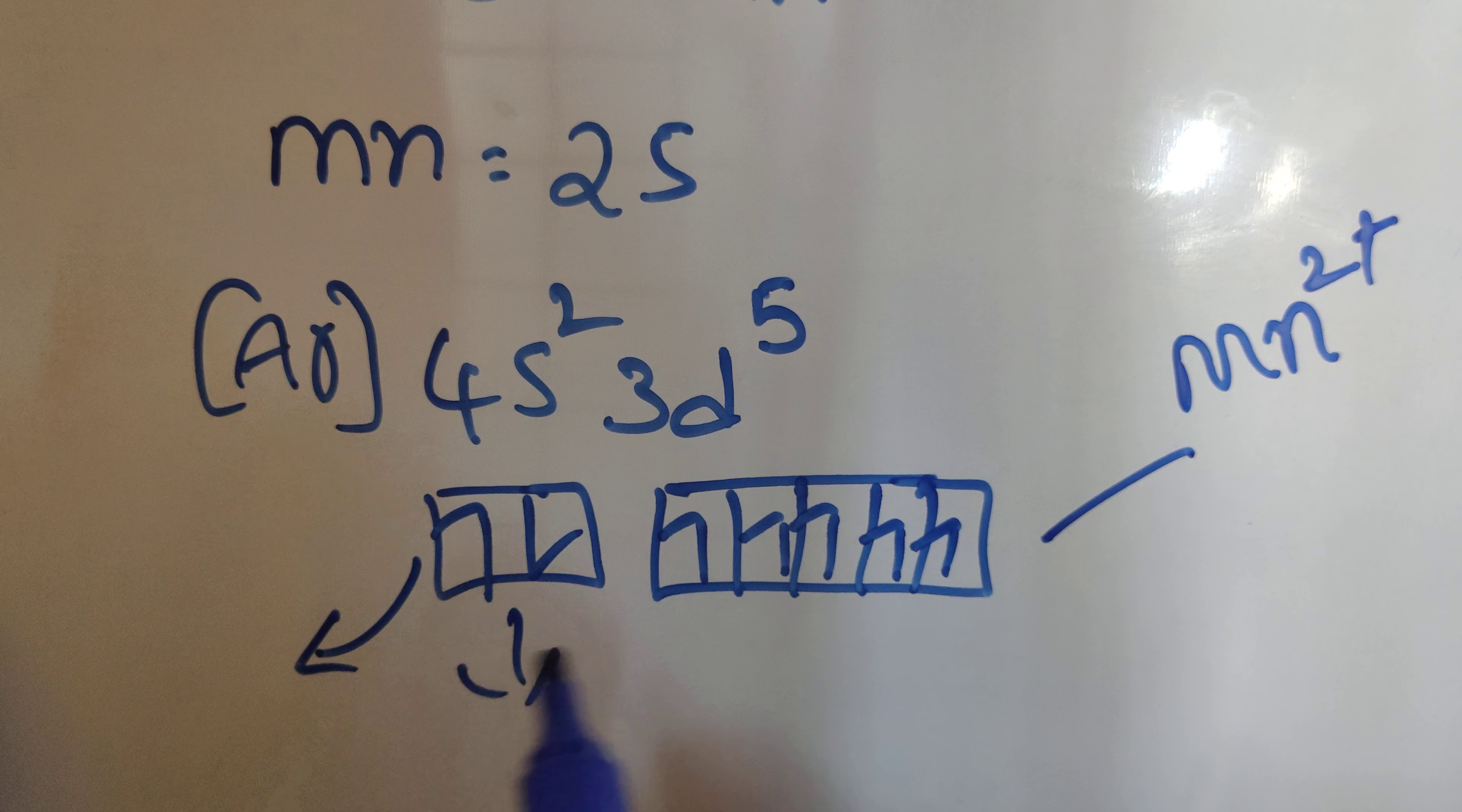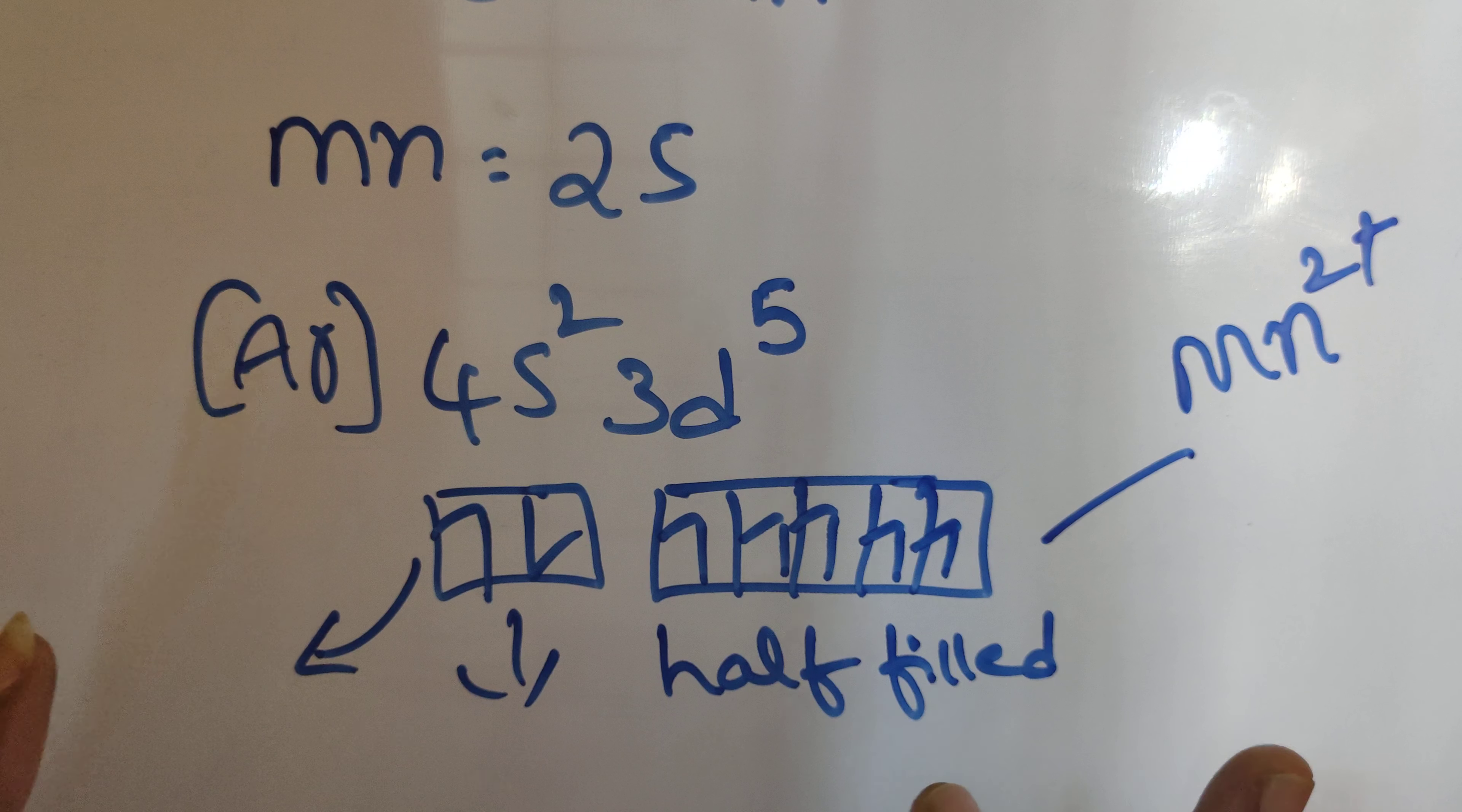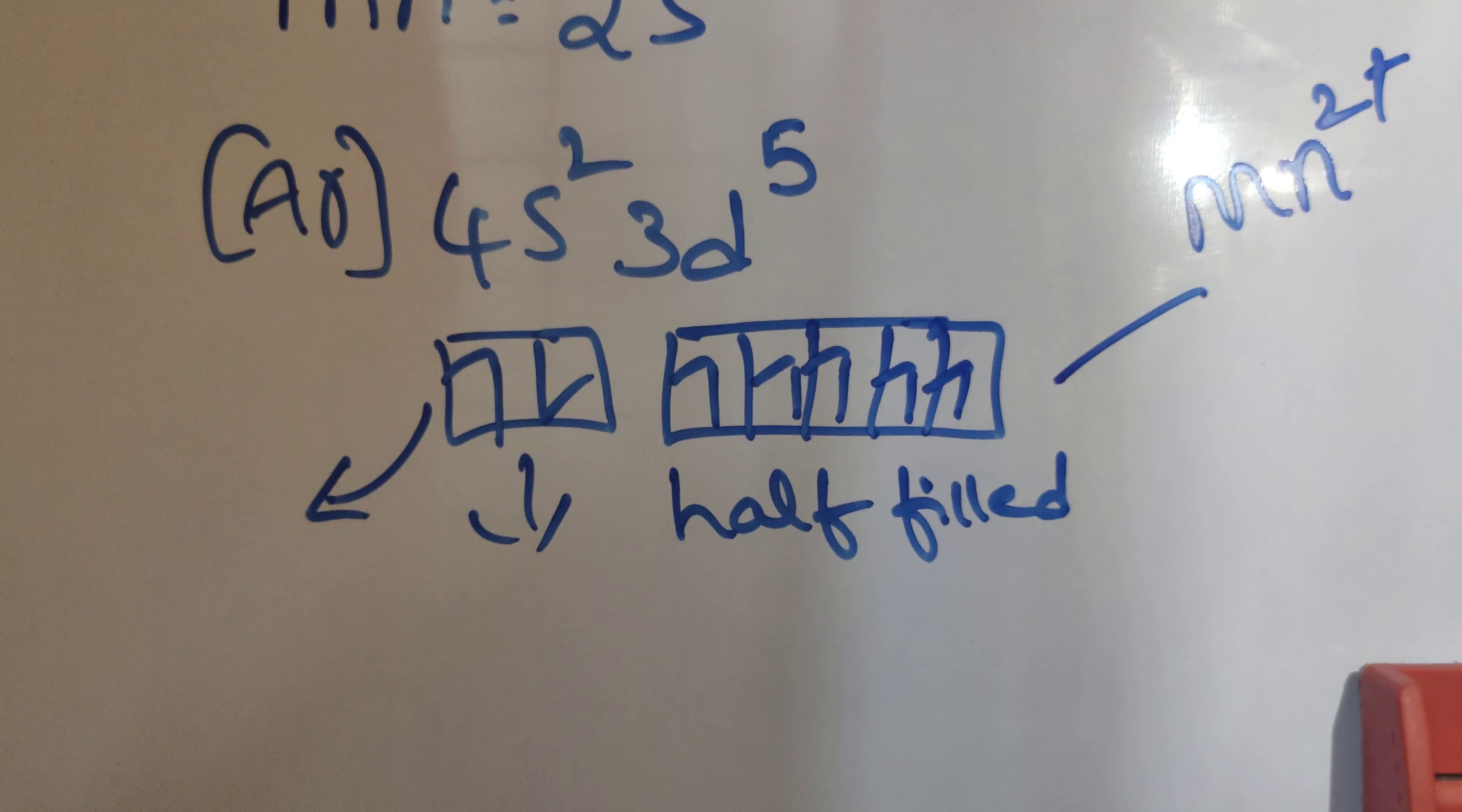We have one rule: half-filled or fully filled orbitals are more stable compared with others. So in Mn²⁺, 3d⁵ orbitals are half-filled.